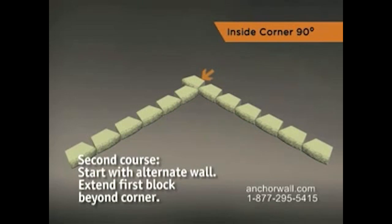For the second course, work from the inside corner outward toward the end of one wall. Begin with the alternate wall and extend the first block beyond the corner to prevent settling.